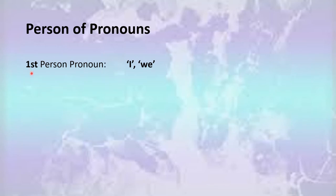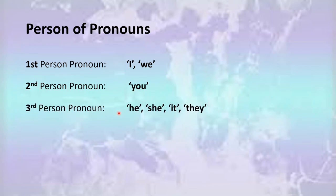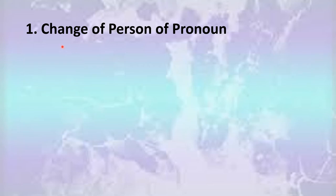Let me first repeat some points for you. I and we are known as the first person pronouns. You is known as the second person pronoun. And he, she, it and they are known as the third person pronouns. We need to change the person of pronouns, and I shall be telling you how to convert the first, second and third person pronouns while converting the given direct speech into indirect speech.